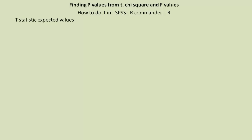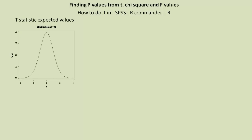We're going to start by just considering the t-value, but it will apply to the chi-square and f-values as we work through these examples. With our t-statistic, we have a set of expected values under a particular condition, and this is what the distribution looks like. The most common value we would expect a t-value to take is zero.